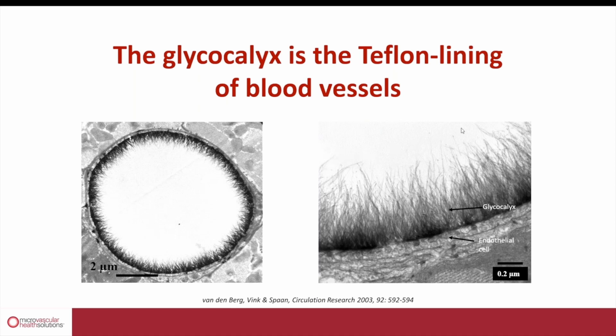On the right-hand side is a large magnification. On top is where the red cells are flowing. Below is the endothelial lining on the inside of the blood vessel wall, and on the surface of the endothelial cells you see this extensive three-dimensional polysaccharide matrix, which makes up the core of the endothelial glycocalyx.